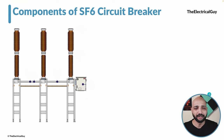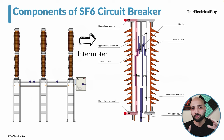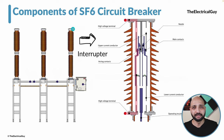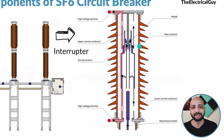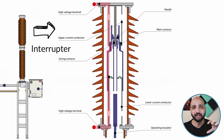Let us start by understanding the interrupter. This top portion that you can see is the interrupter — this is R phase, this is Y phase, and this is B phase. This is the main portion of the circuit breaker where current interruption takes place, hence the name interrupter. Here both the normal rated current and the abnormal fault current from short circuits are interrupted. It has two types of contacts: the main contact and the arcing contact.